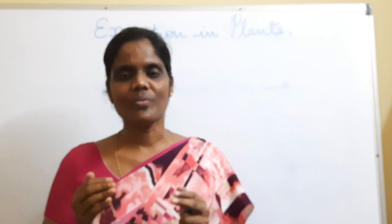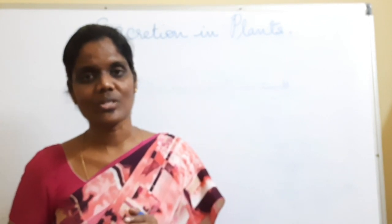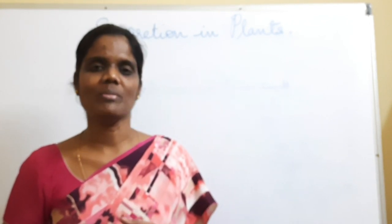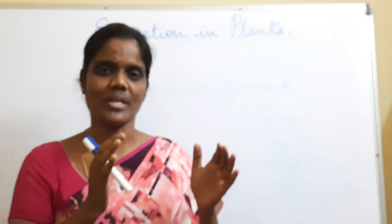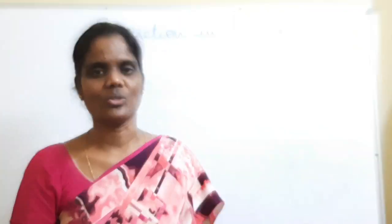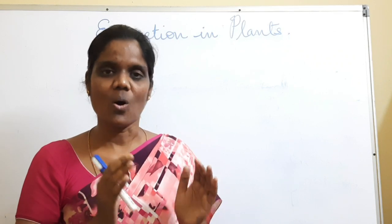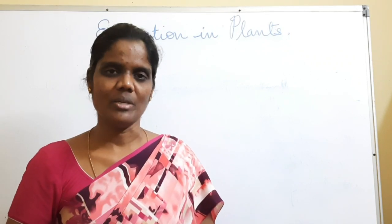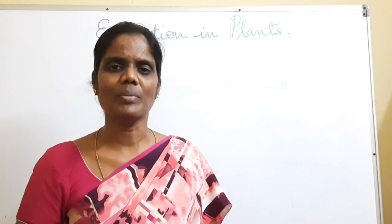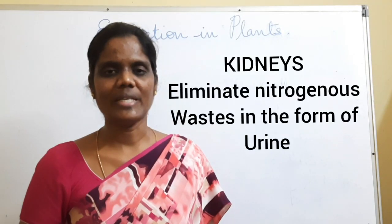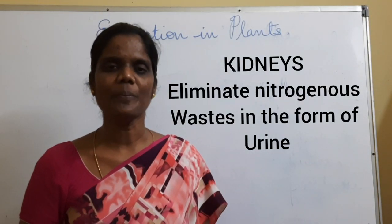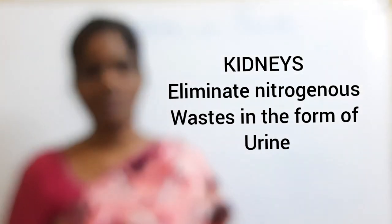Elimination of waste can be easily understood in animals because animals and human beings have specialized organs or units for elimination of waste products. For example, you have the kidney which eliminates urine as a nitrogenous waste.